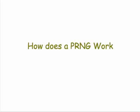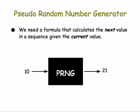So let's see how a PRNG works. We need a formula that calculates the next number in a sequence given the current number. For example, if we had a PRNG with the number 10 as the current number, it might produce the number 21.